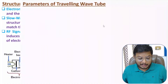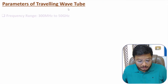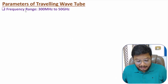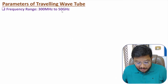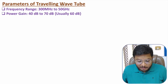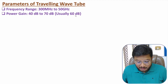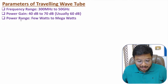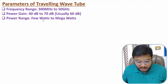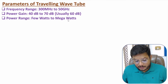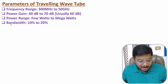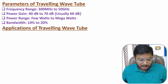The parameters of the traveling wave tube: frequency range is 300 MHz to 50 GHz. Power gain is 40 dB to 70 dB, usually around 60 dB — tunable down to 20 dB as well. Power range is from a few watts to megawatts, covering a broad range of applications. Bandwidth is quite large — 10 to 20% bandwidth is available.